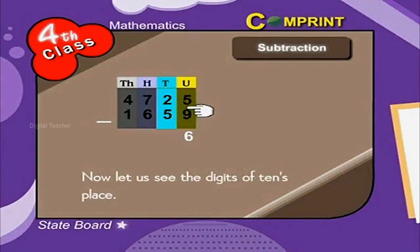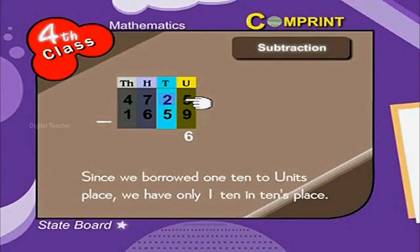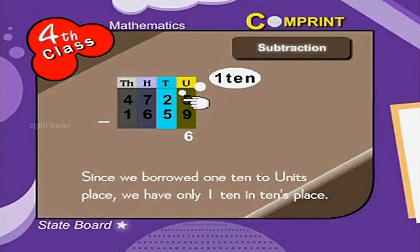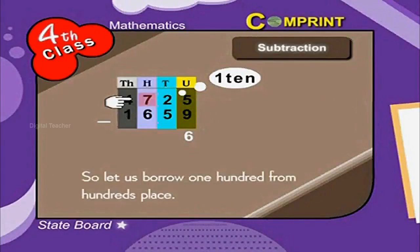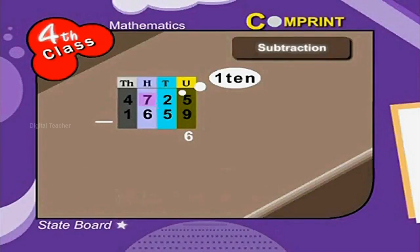Now, let us see the digits of tens place. Since we borrowed one 10 to units place, we have only one 10 in tens place. That is 1 minus 5. So, let us borrow one 100 from hundreds place. That is 11 minus 5. 10 plus 1 minus 5 is equal to 10 minus 5 is equal to 5 plus 1 is equal to 6.